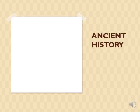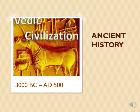The Vedic civilization is the earliest civilization in the history of ancient India. It is named after the Vedas, the early literature of the Hindu people. The Vedic civilization flourished along the river Saraswati in a region that now consists of the modern Indian states of Haryana and Punjab. Ancient history covers all continents inhabited by humans in the period 3000 BC to AD 500.